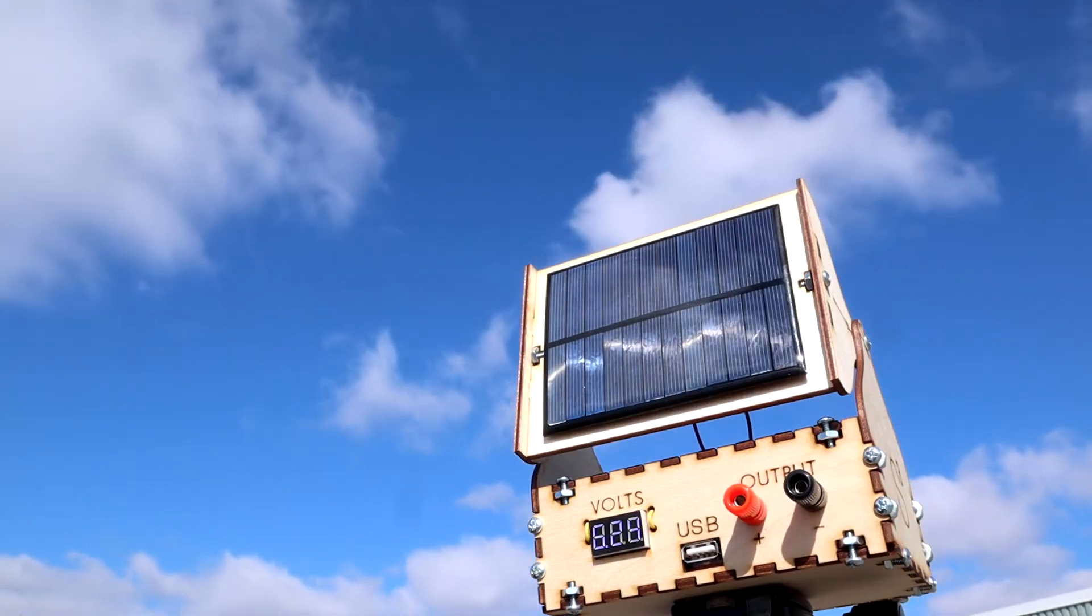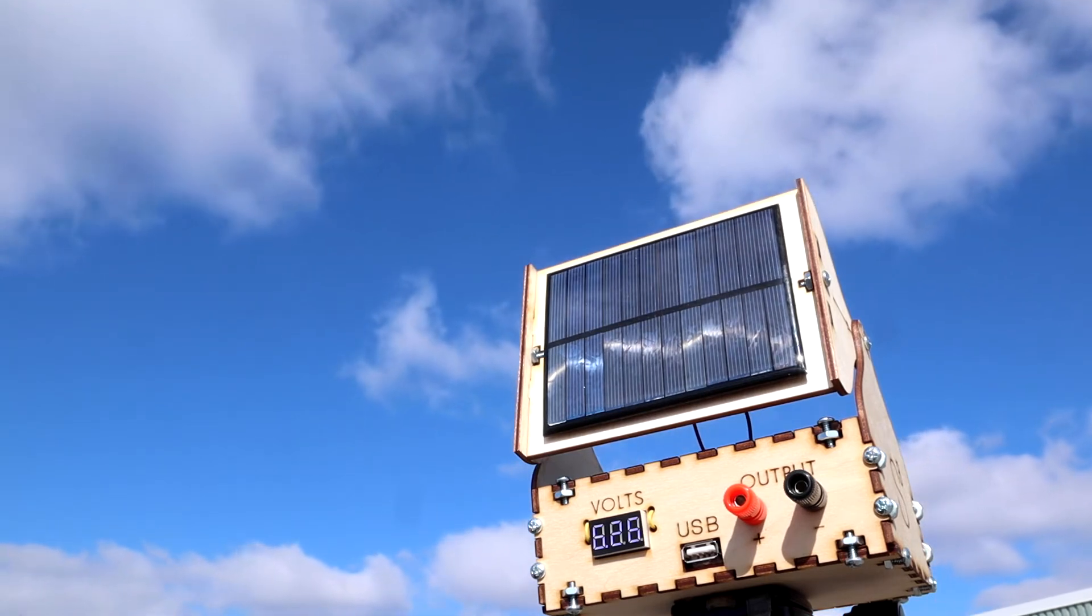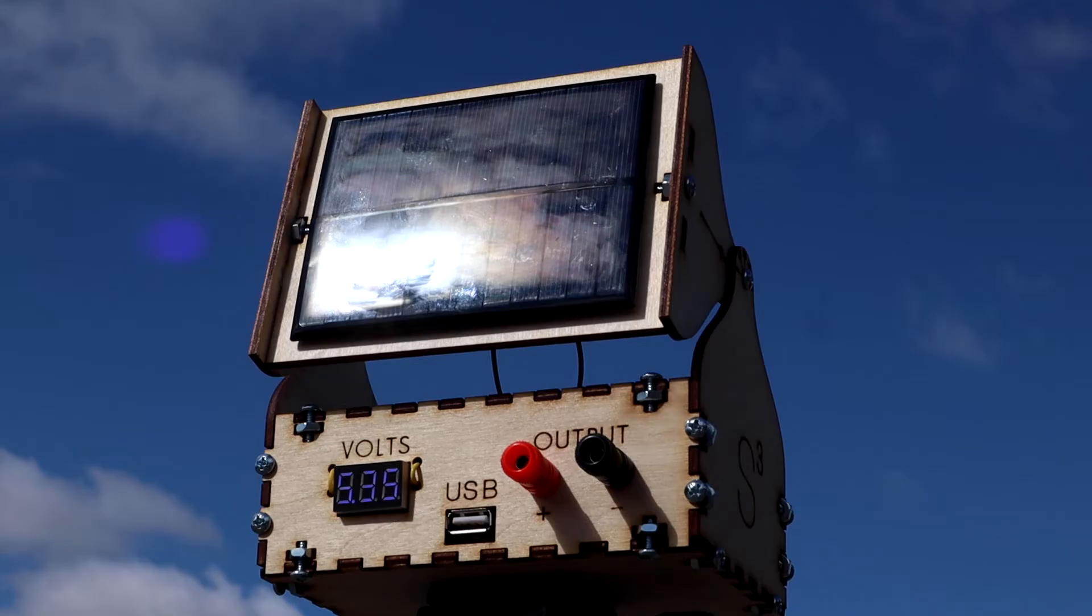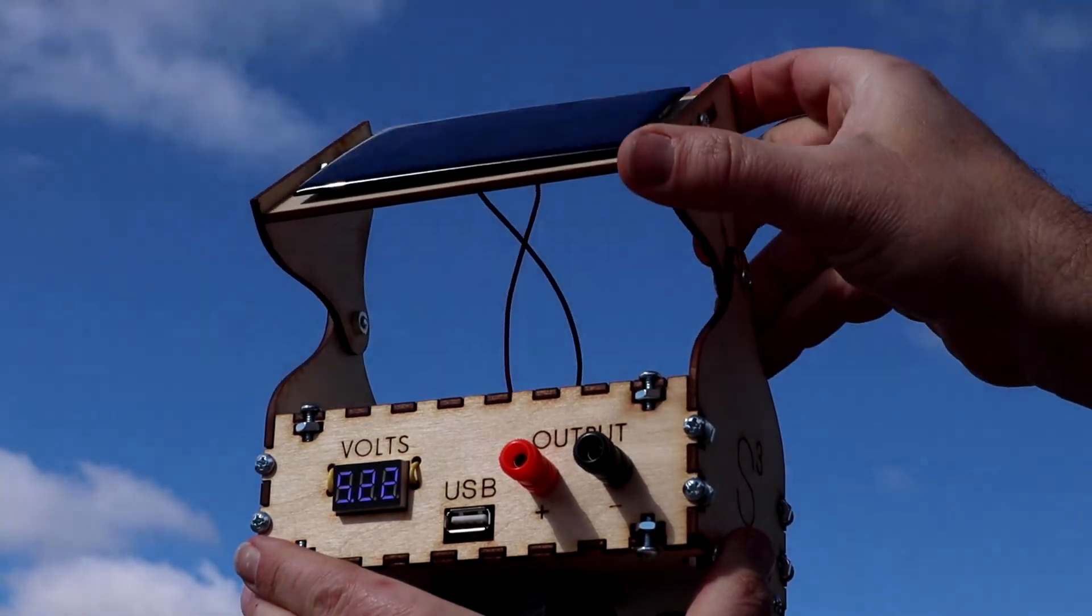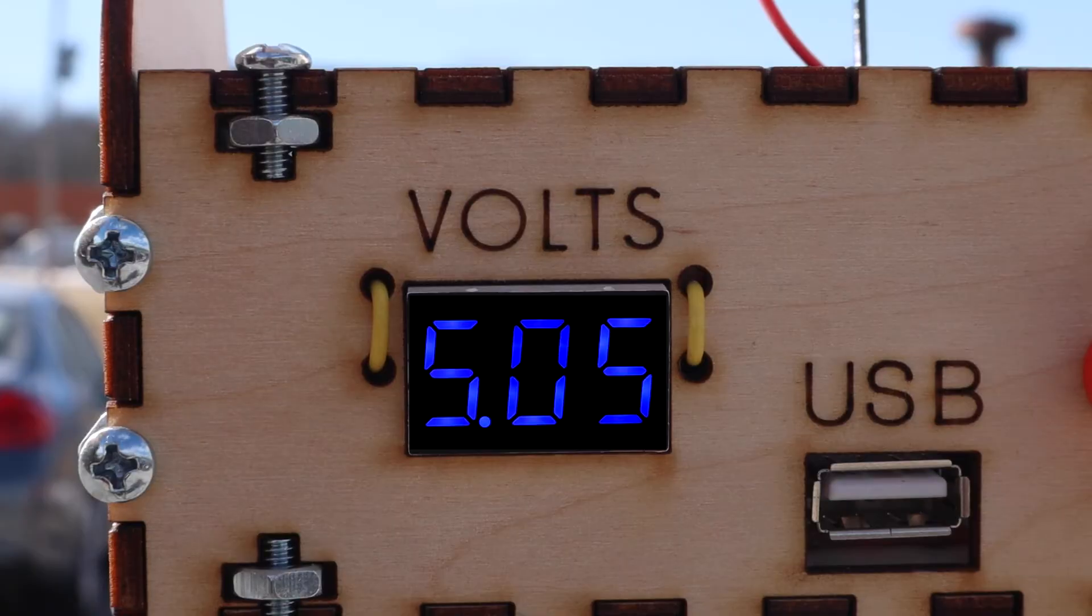You are now ready to take the project outside in full sunlight to test it out. Point the solar panel towards the sun and note the voltage. Change the angle of the panel and check the voltage again.